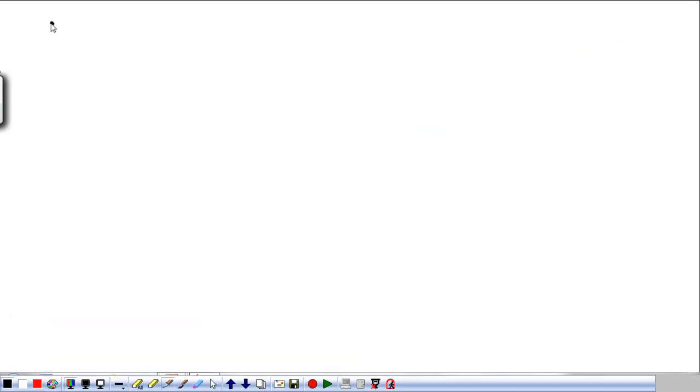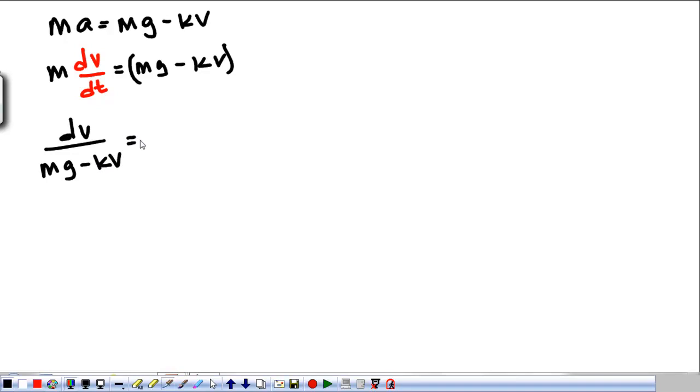So, we start off with Newton's second law for our situation. M A is equal to Mg minus kv. And we substitute for A. M, now we have A is the derivative of velocity with respect to time, is equal to Mg minus kv. We're going to separate the variables, which means we're going to put everything that's a function of v, so this, and v on one side, and everything that's not on the other. So, we've got dv over Mg minus kv, and that's going to be equal to dt over M. What we have just done is called separation of variables. We put all of our variables with v on one side, all of our variables with t on the other side.